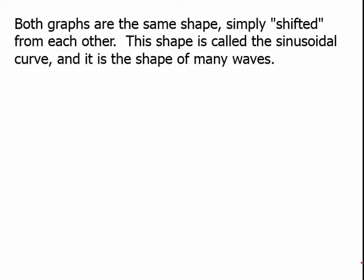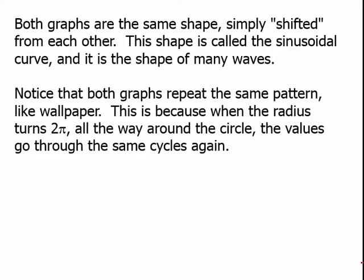Both graphs are really the same shape, simply shifted from each other. This shape is called the sinusoidal curve and it is the shape of many waves — a very important shape in mathematics. Notice that both graphs repeat the same pattern like wallpaper, because when the radius turns 2 pi all the way around the circle, the values go through all the same cycles again.